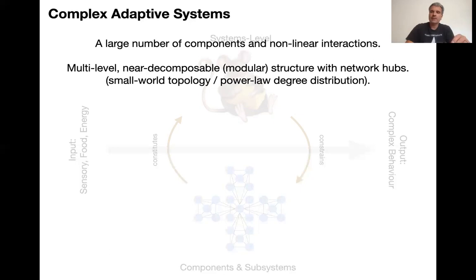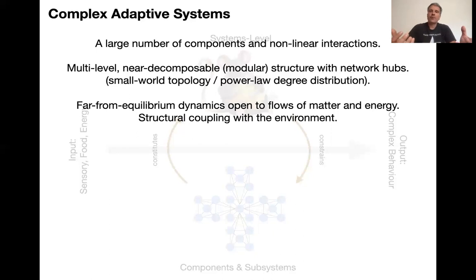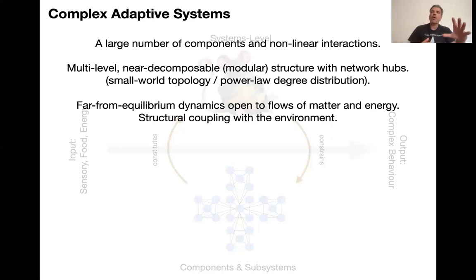These hubs in the network are very rare but have a disproportionately big influence on the network and also the evolution of the system. These are technical terms that will be very important in the future. Also, very importantly, any complex adaptive system is far from thermodynamic equilibrium and it's open — open to flows of matter and energy. If you don't eat, you die. If a plant doesn't get any sunlight, it dies. This is an essential aspect of living. The system has to be structurally coupled with the environment: it perceives its environment, but it also influences its environment in unexpected ways.